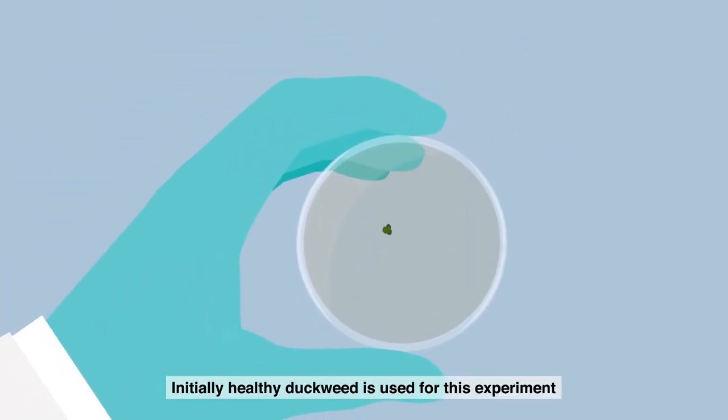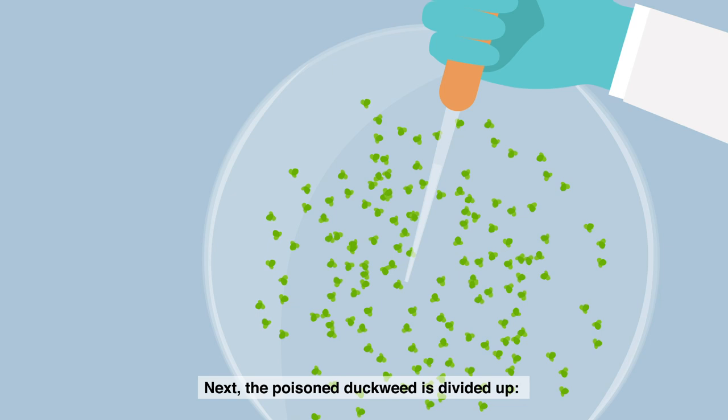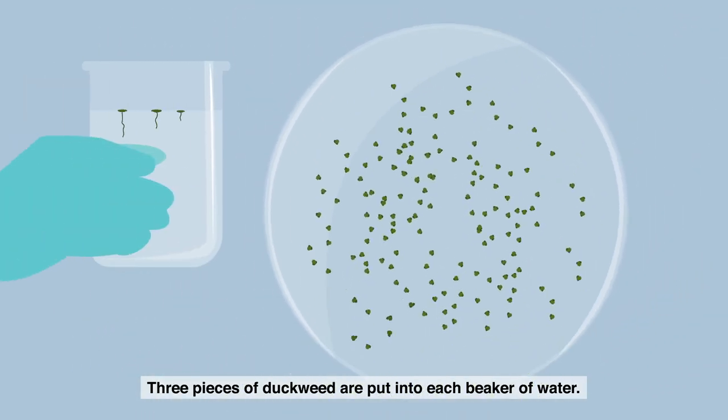Initially, healthy duckweed is used for this experiment, which is then poisoned with arsenic. Next, the poisoned duckweed is divided up. Three pieces of duckweed are put into each beaker of water.